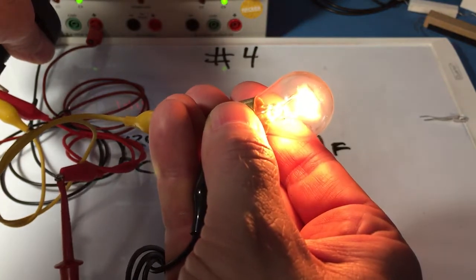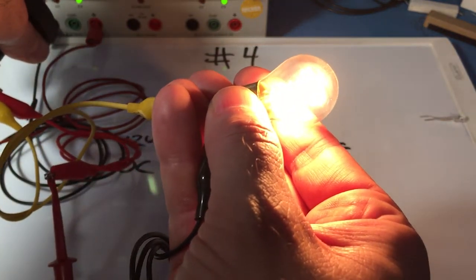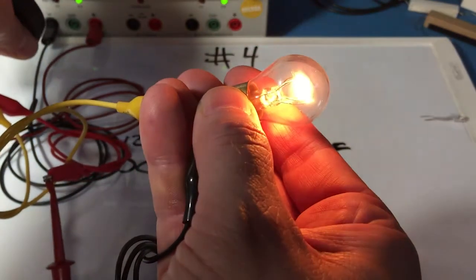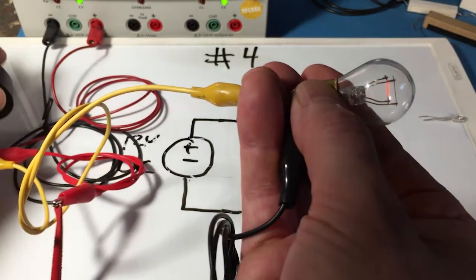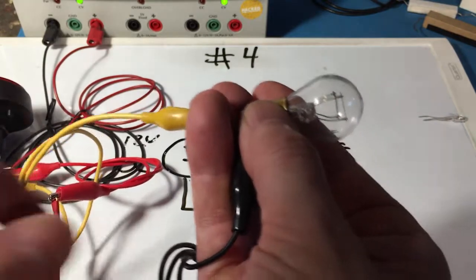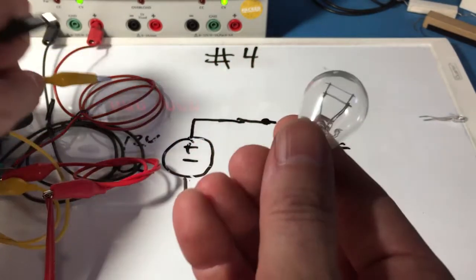As we crank up the voltage, we start getting more and more of the full spectrum because we're going to shorter and shorter wavelengths. So we're getting the greens and the blues in there, and then ultimately we'd get ultraviolet, but probably not with this bulb. It'll probably burn out first.